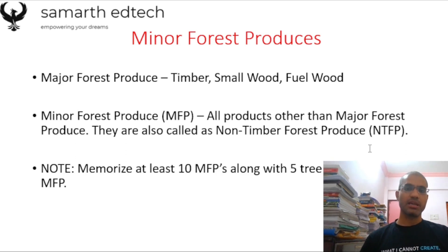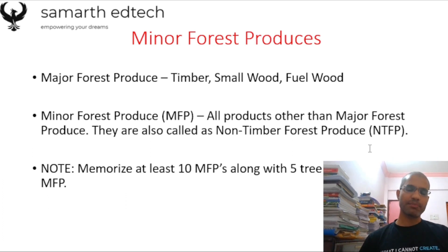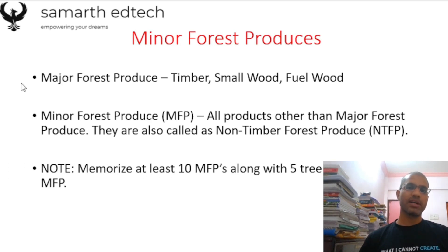In the Manikandan book there is a separate table for different types of NTFP. Try to memorize at least 15 different types of NTFP because UPSC generally asks to write 6, 7, or even 15 NTFP. They also want you to write the name of the tree species from which that particular non-timber forest produce is derived — for example, shellac, lac, or tannin — along with at least five different tree species for each.